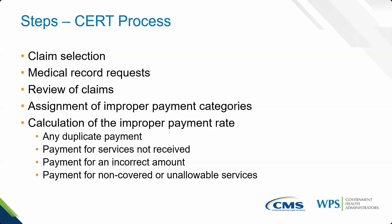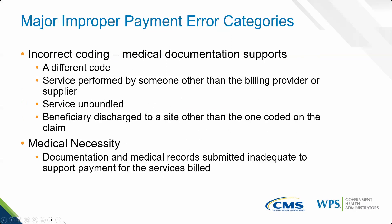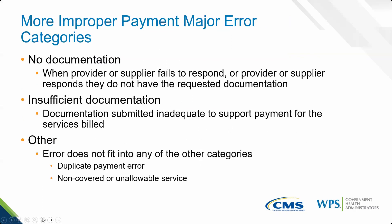For medical necessity errors, documentation and records received would seem inadequate to support payment for the services billed. Other major categories include no documentation — when the provider or supplier does not respond, or responds but doesn't have the requested documentation when the CERT contractor requests it. Another category is insufficient documentation, meaning documentation was submitted but was inadequate to support payment for the services billed. Finally, there is a category called 'other,' for errors that don't fit into any other category, such as duplicate payment errors or non-covered or unallowable services.